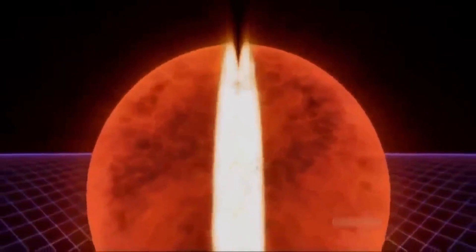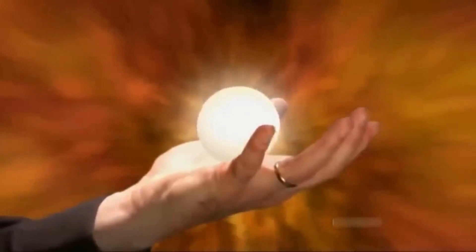What's left is a heavy core of subatomic particles. A neutron star. Only about ten miles across, but of incredible density. In fact, it's so dense that a teaspoonful of neutron star matter would weigh about a billion tons.